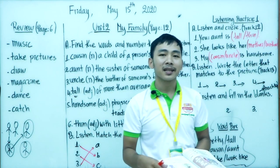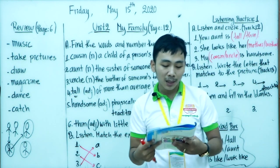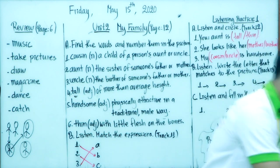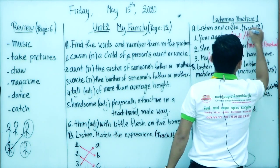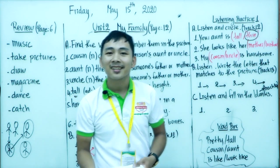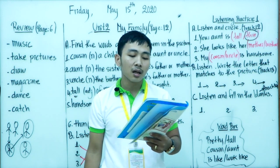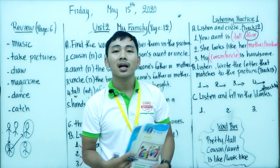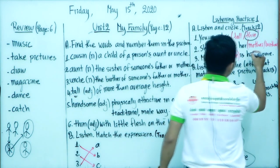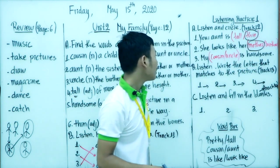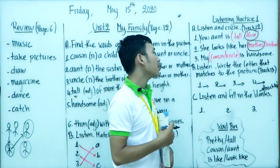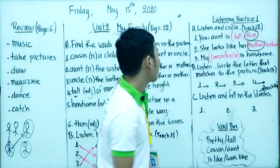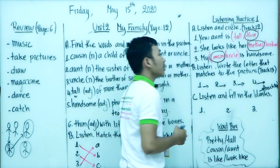Welcome back. Let's check the answers. Number 1: 'Your aunt is tall or thin?' — the answer is thin, so circle 'thin.' Number 2: 'She looks like her mother or her brother?' — the answer is mother, circle 'mother.' Number 3: 'My cousin or my uncle is handsome?' — the answer is 'my cousin,' so circle 'cousin.' My cousin is handsome.